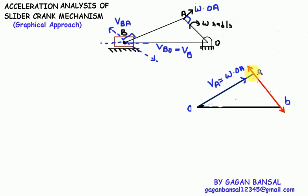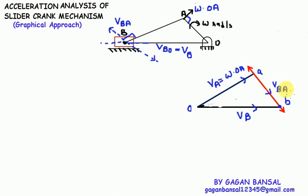The absolute velocity of B, or velocity of the slider, is along the horizontal line OB. From point O draw a horizontal line which meets vector AB at point B. This OB represents velocity of B, and vector AB represents velocity of B with respect to A. This completes the velocity diagram.